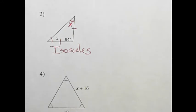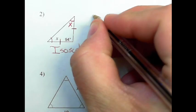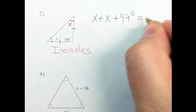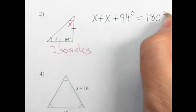The other thing I know is that all three angles should add up to 180 degrees. So x plus x plus 94 degrees should equal 180 degrees.